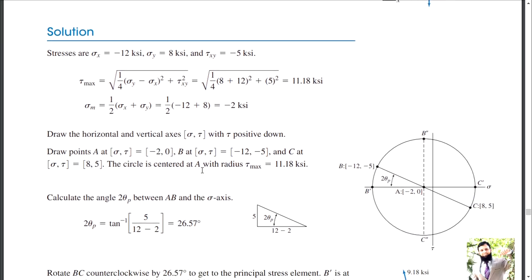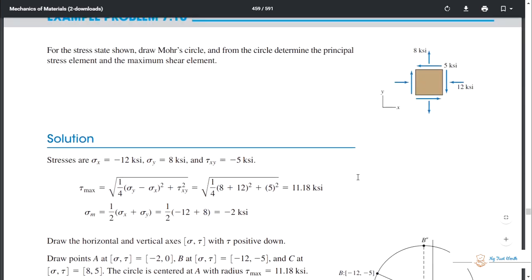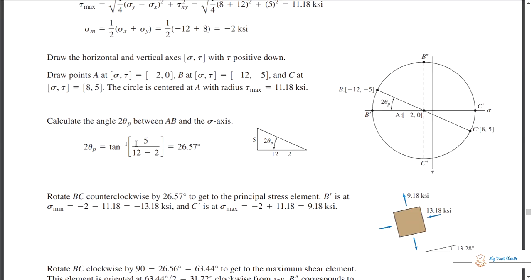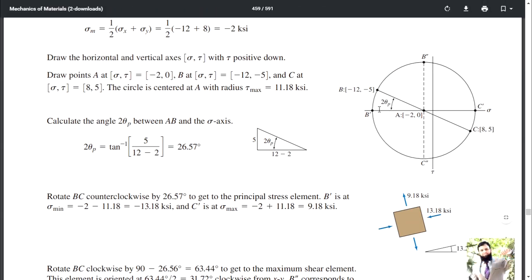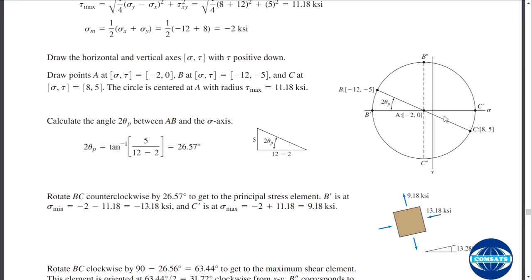The circle center is at A with radius 11.18 KSI — you have drawn the circle. Now, maximum shear stresses are at the top and bottom of the circle, maximum principal stresses are at the rightmost point, and minimum principal stresses are at the leftmost point. You have to find the inclination angle with the principal stresses. You can take this triangle or that triangle — you will get the same answer.